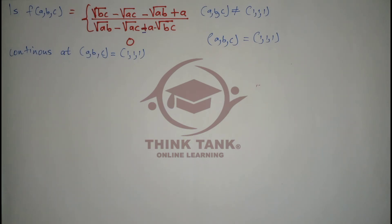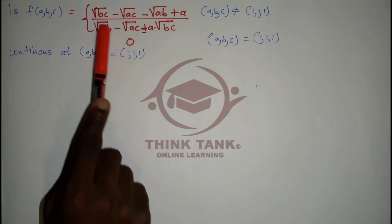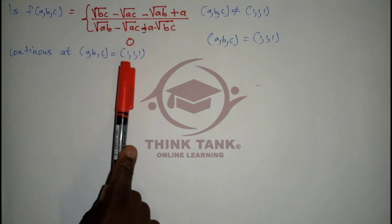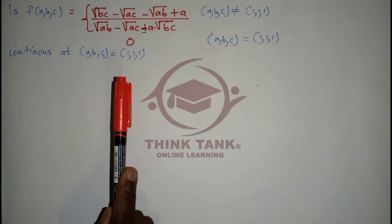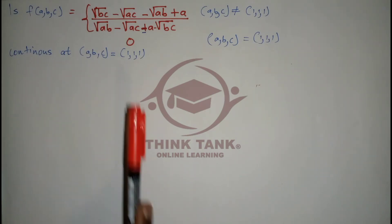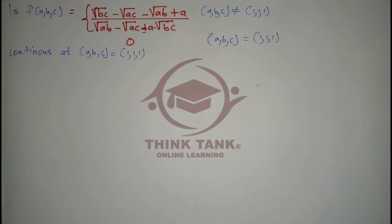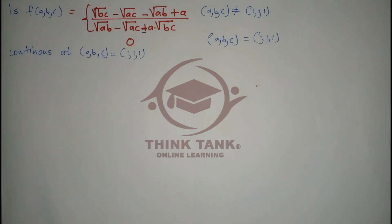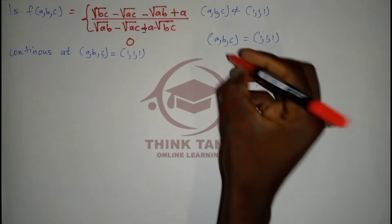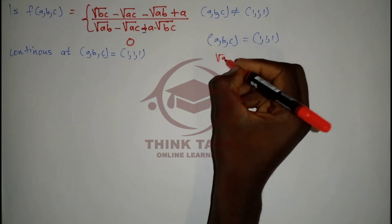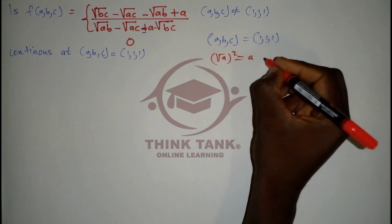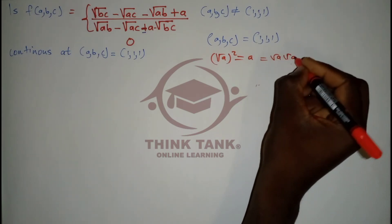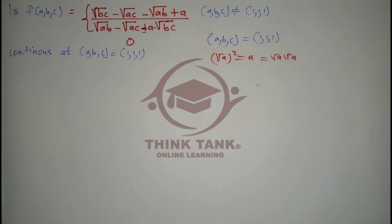Some of you may think of rationalizing this expression, but if you try, it becomes very large and difficult to solve. Instead, we're going to use some basic principles — going from what you know to what you don't know. Since some of the variables are under roots, we'll use the identity that root(a²) equals a, which means a equals root(a) times root(a). That's the core concept we'll apply.